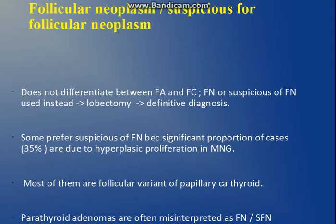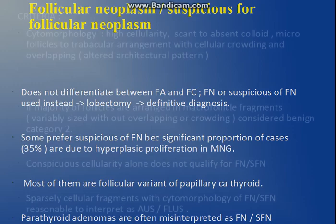Now going to the fourth category — Follicular Neoplasm or Suspicious for Follicular Neoplasm. It is very important to know that FNAC does not differentiate between a follicular adenoma or a follicular carcinoma. So we give the diagnosis as follicular neoplasm or suspicious for follicular neoplasm, and then the patient has to undergo lobectomy for a definitive diagnosis. Some prefer the term 'suspicious for follicular neoplasm' because some cases are only hyperplastic proliferation in multinodular goiter.